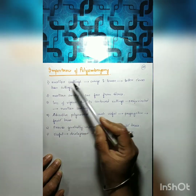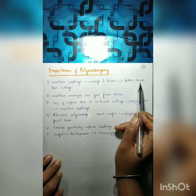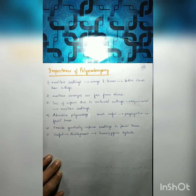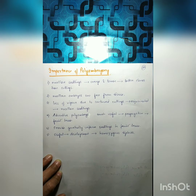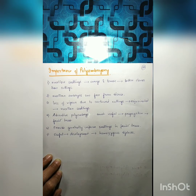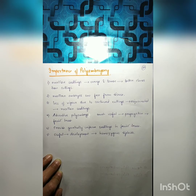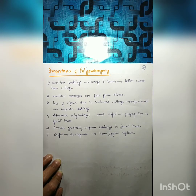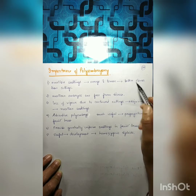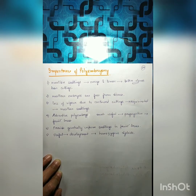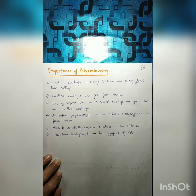Nucellar seedlings in the case of orange and lemon are better clones than cuttings. Vegetative propagation through cuttings can be used, but nucellar seedlings in polyembryony are a better clone — they show characteristics similar to their parents.